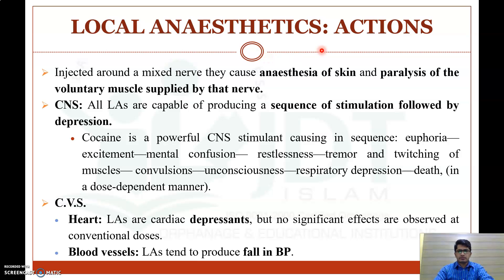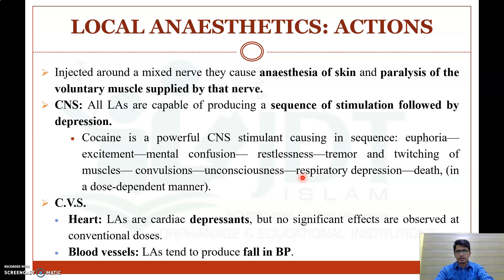Regarding actions of local anesthetics: when injected around a mixed nerve, they produce anesthesia of the skin and paralysis of voluntary muscle supplied by that nerve. On the CNS, all local anesthetics produce a sequence of stimulation followed by depression. For example, cocaine produces dose-dependent effects: euphoria, excitement, mental confusion, restlessness, tremors, twitching, convulsions, unconsciousness, respiratory depression, and finally death.